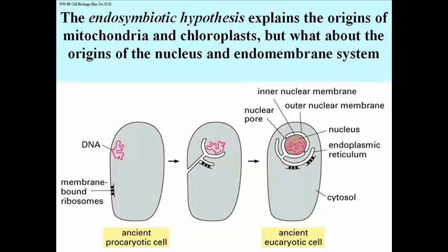This illustration suggests what might have been the origin of the intracellular membranes — specifically the endomembrane system, which actually includes the nucleus. On the left we have a prokaryotic cell with its DNA. The DNA of bacteria is not free-floating in the cytoplasm but is actually attached at one point to the cell membrane. Bacteria also have ribosomes translating messenger RNAs into polypeptides that end up outside the cell as secreted proteins, and these ribosomes are actually attached to the cell membrane.